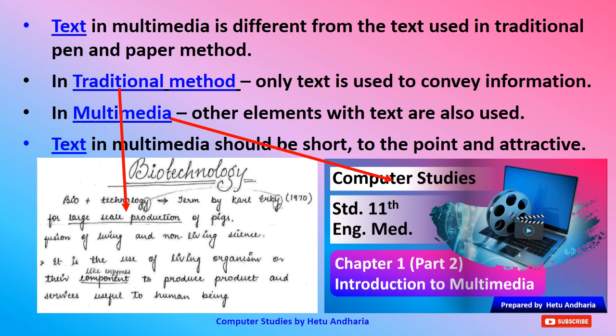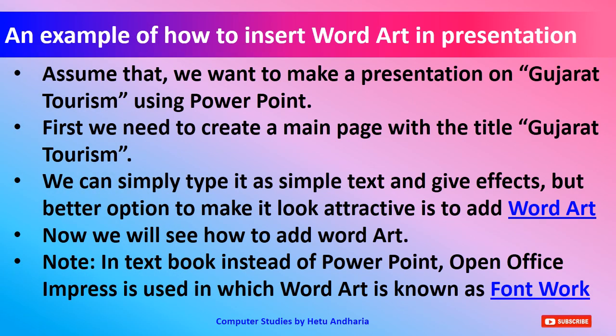Text in multimedia is different from text used in the traditional pen and paper method. In the traditional method, only text is used to convey information — you can see a biotechnology example here. In multimedia, other elements along with text are also used. Text in multimedia should be short, to the point, and attractive — write minimum things, only the relevant concept, and the rest can be explained verbally.